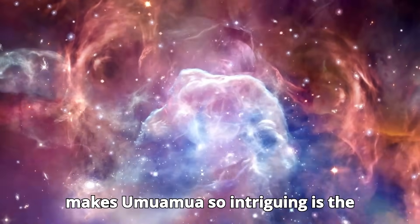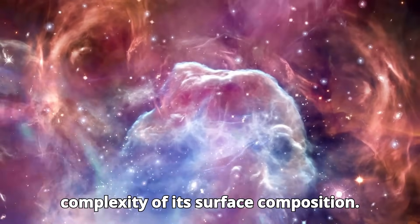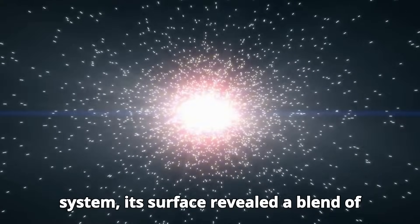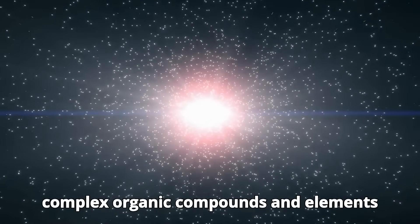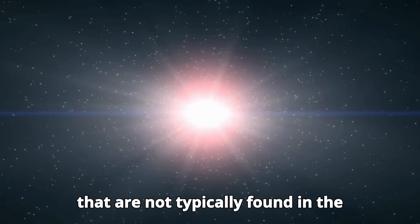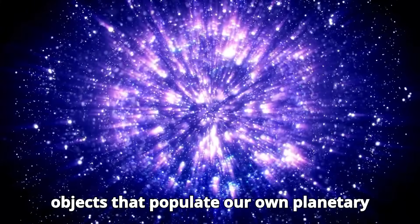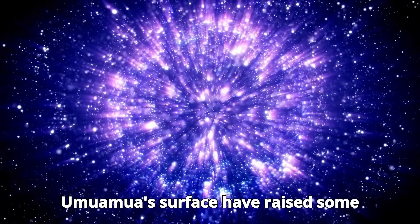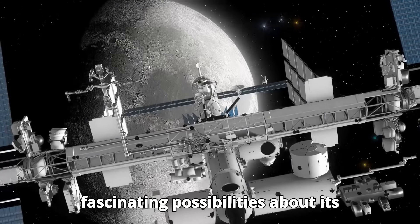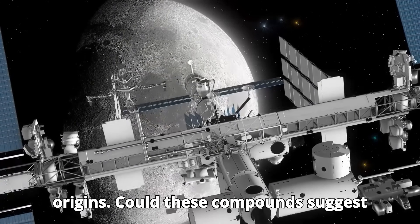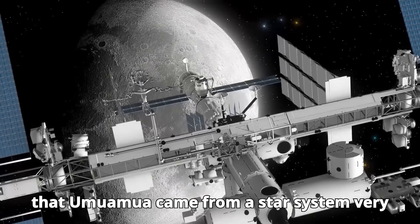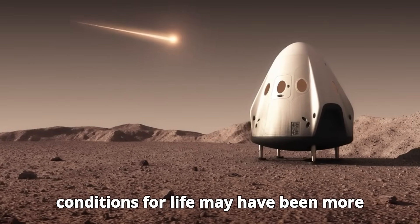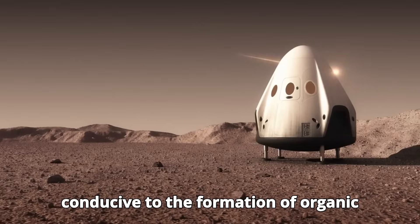What truly makes Oumuamua so intriguing is the complexity of its surface composition. Unlike any known object in our solar system, its surface revealed a blend of complex organic compounds and elements that are not typically found in the objects that populate our own planetary system. The organic compounds found on Oumuamua's surface have raised some fascinating possibilities about its origins. Could these compounds suggest that Oumuamua came from a star system very different from our own, one where conditions for life may have been more conducive to the formation of organic molecules?